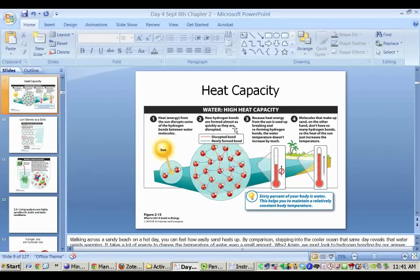So the next property of water that makes it important to life is its heat capacity, and so water has a very high heat capacity. What energy is released in the form of heat from the sun, that sun energy is going to disrupt some of the hydrogen bonds between water molecules. You can see those water molecules and their hydrogen bond breaking apart. And so then as new hydrogen bonds are formed almost as quickly as they are disrupted, you can see here they're disrupting and they're attaching back together and they're disrupting and they're attaching back together. Because of this heat energy from the sun being used to break apart and reform the hydrogen bonds, the water temperature doesn't increase by much.